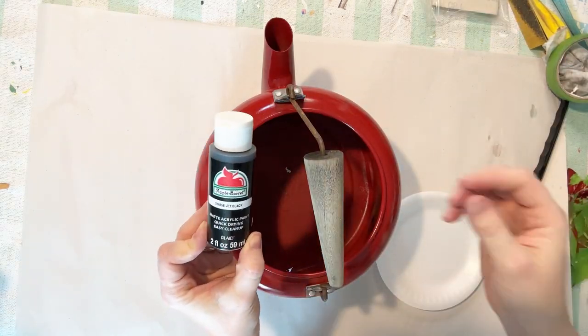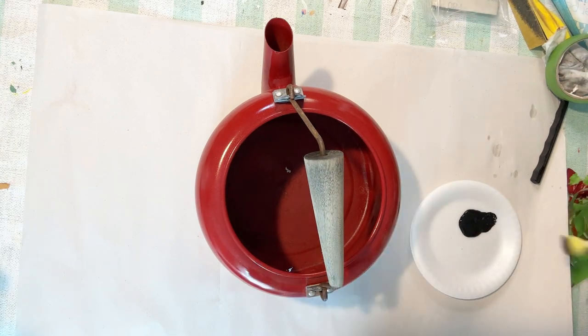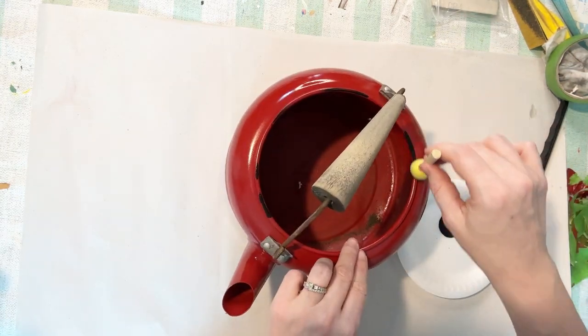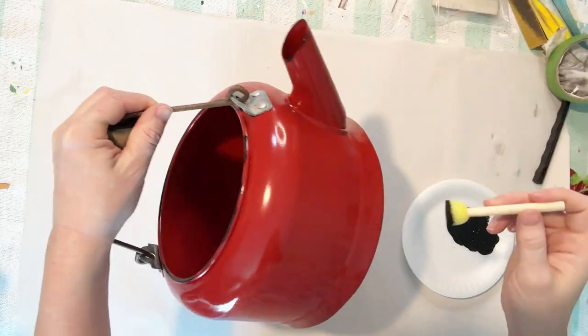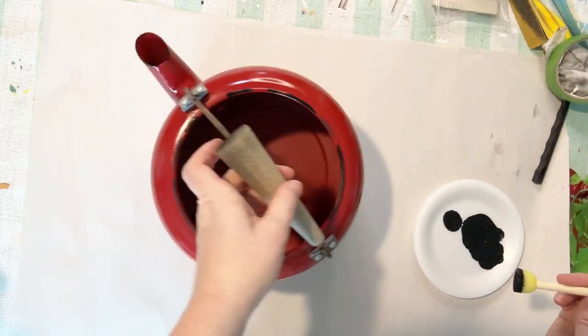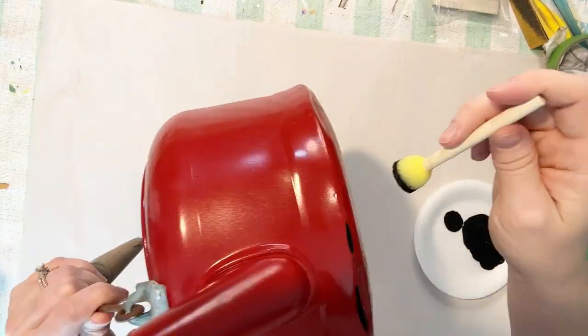I did initially think I would do all of the handles but I decided not to do that. All right, then I'm just going in with a pouncer and some black, flat black paint. And I literally am just kind of rubbing it in places. And this is going to give it an enamel look. It's going to make it look like real enamel wear.